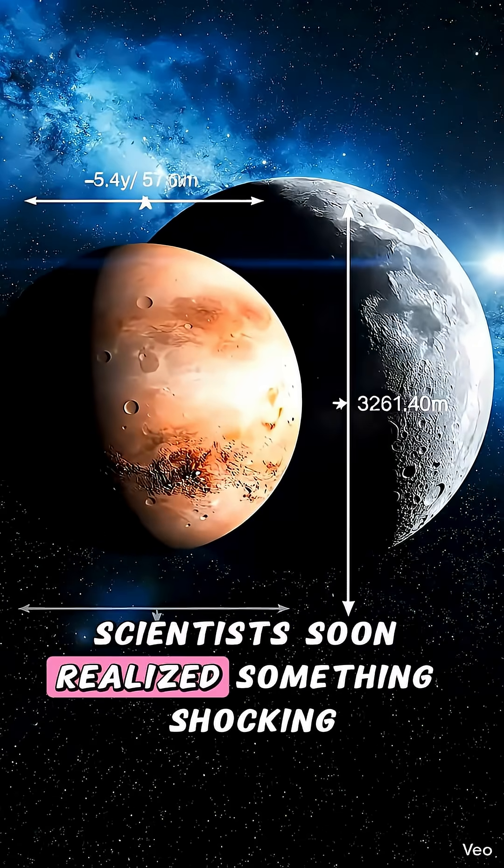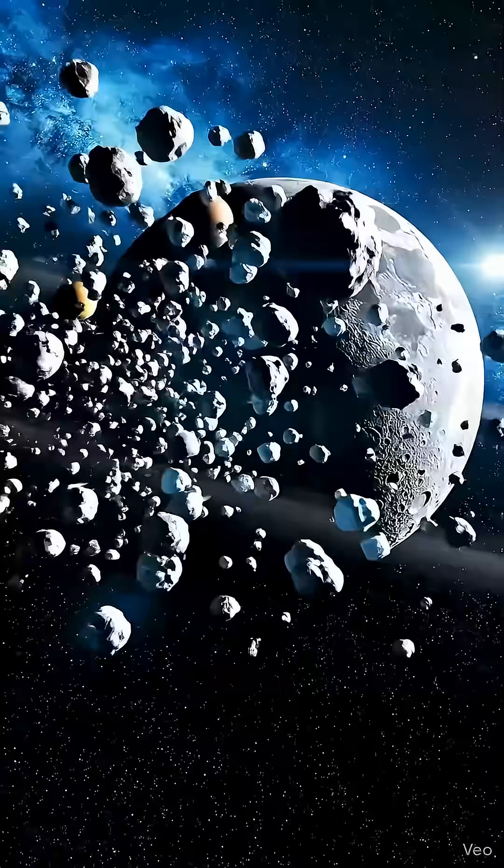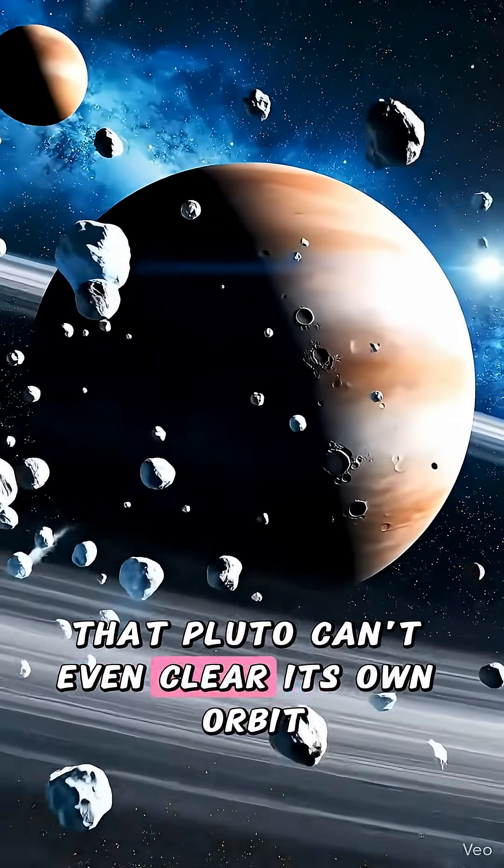Scientists soon realized something shocking. Pluto is actually smaller than Earth's moon. And its neighborhood is packed with so many objects that Pluto can't even clear its own orbit.